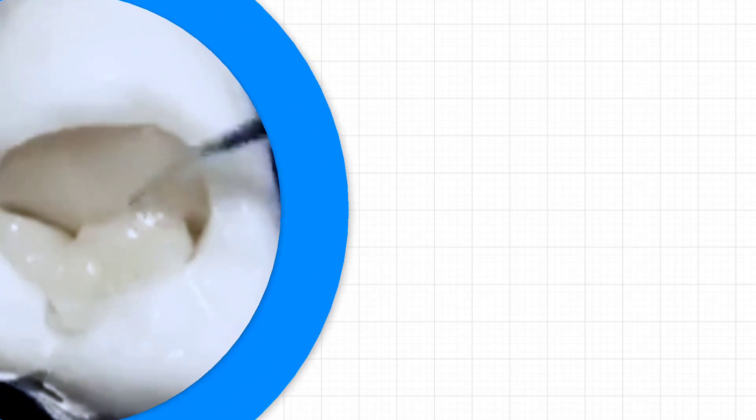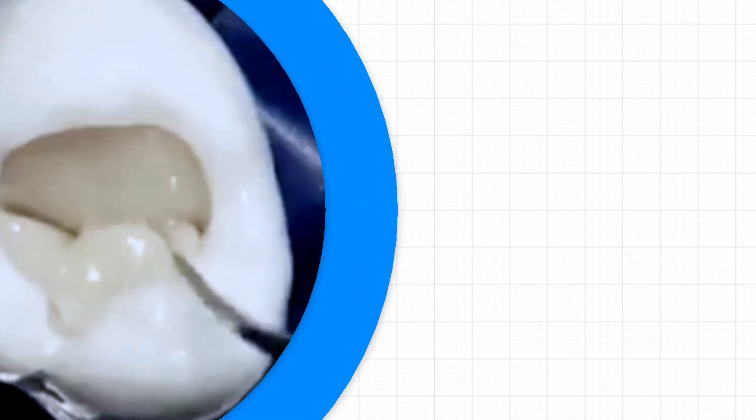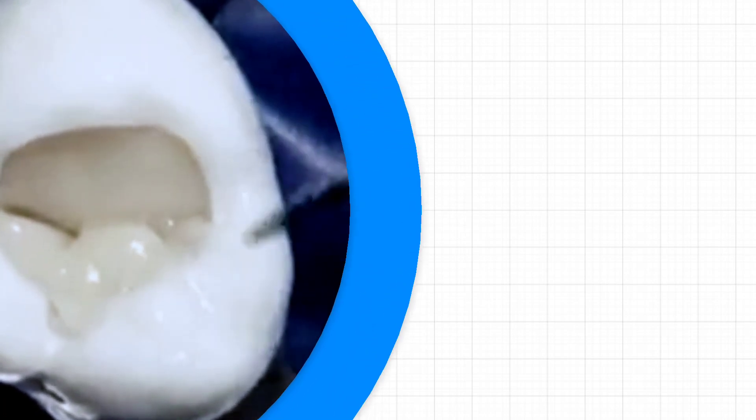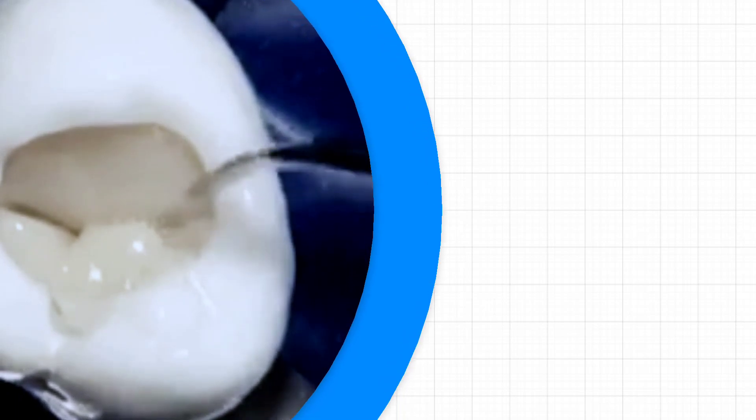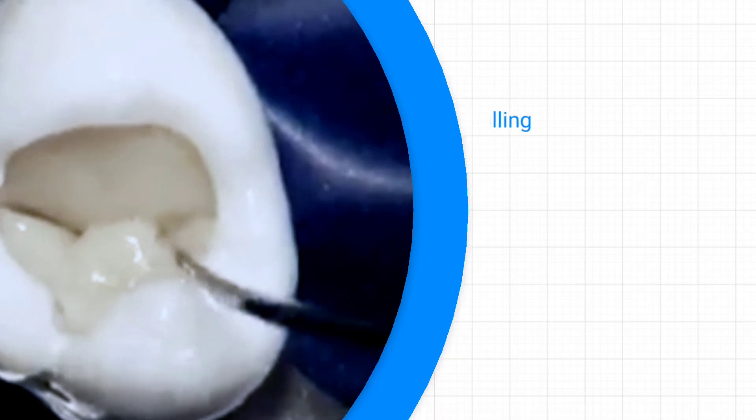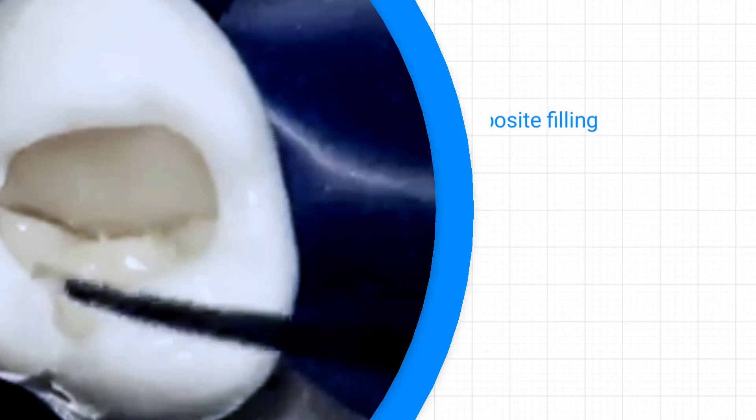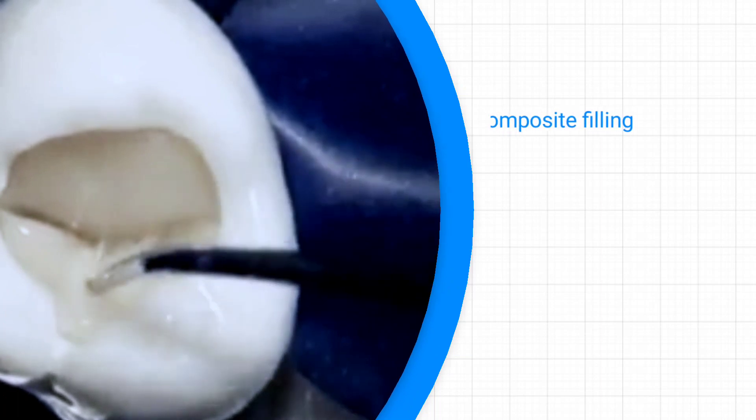One reason why we tend to place composite as multiple thin layers instead of using just a single lump is that the light from a curing light can only penetrate through so much thickness, and this thickness is around 2 millimeters at a time. If a layer is too thick, it won't get fully cured.